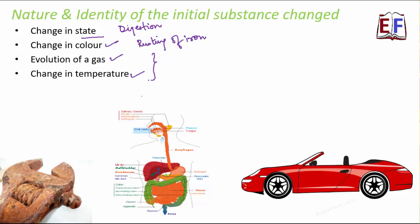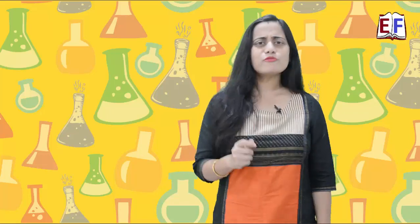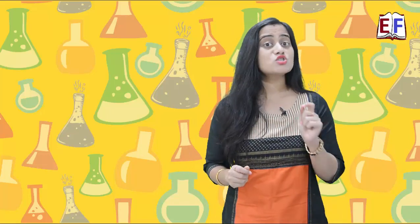So as chemical reactions take place, there is also a change in temperature. So these two phenomena are illustrated by this example of a vehicle. Burning of petrol or diesel in a vehicle shows that there is evolution of gas or change in temperature during a chemical reaction.